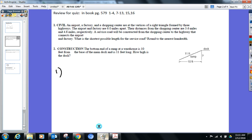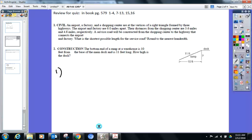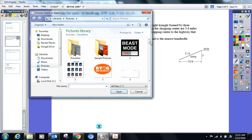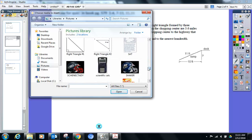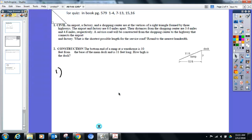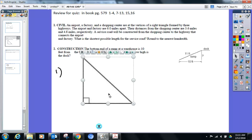All right, no diagram provided in number one, so we're going to have to do our own here. I got an airport, a factory, and a shopping center. Those are three vertices on my right triangle, so let's get a right triangle down.